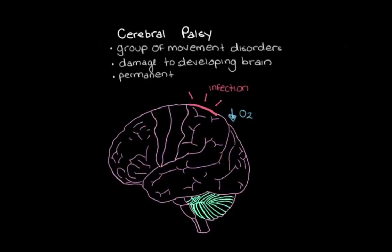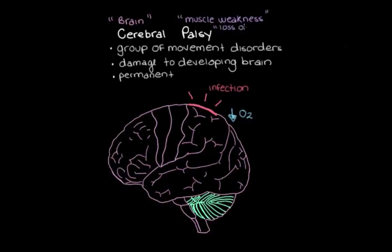Now that we know a little bit more about cerebral palsy, we can make more sense of the name. Cerebral means brain — this is where the damage is. And palsy means muscle weakness or loss of function — describing the main problem that arises from this damage in the brain.